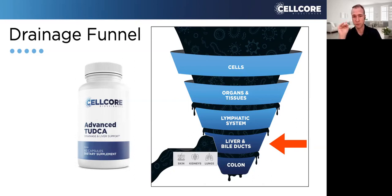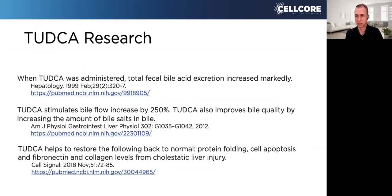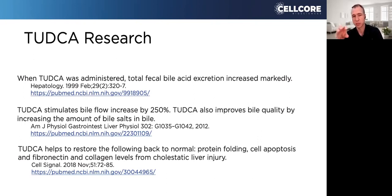Advanced TUDCA is one of the strongest things to open up bile flow. When you're looking at TUDCA, it actually helps you to excrete bile. Bile will oftentimes get recycled because it's energetically expensive for the body to make. So when you take TUDCA, it actually helps you to excrete more — to get rid of those toxins and flush them out.